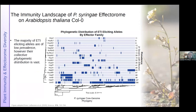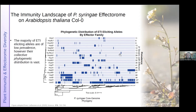Taking those 19 immunity-eliciting alleles and mapping them back into their phylogenetic context — shown here as the Pseudomonas syringae core genome phylogeny in blue — we can see that the majority of ETI-eliciting alleles are low prevalence, but the collective phylogenetic distribution is vast. The take-home message is that Arabidopsis thaliana has a robust immune response to the entirety of the syringae complex, mediated through only a handful of effectors.